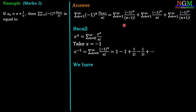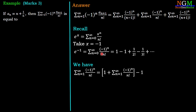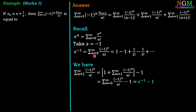Now consider the second sum: Σ (n=1 to ∞) (-1)^n/n!. This is similar to e^{-1} but that summation starts from n=0, while this one starts from n=1, so the first term is missing. We add and subtract the first term (which is 1): 1 + Σ (n=1 to ∞) (-1)^n/n! - 1. The bracket represents Σ (n=0 to ∞) (-1)^n/n! = e^{-1}, so this second sum equals e^{-1} - 1.